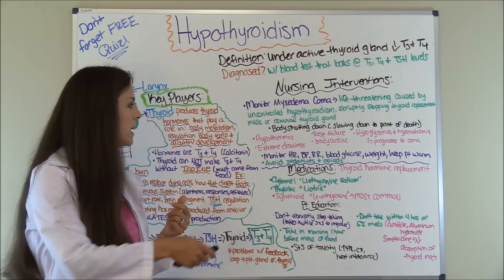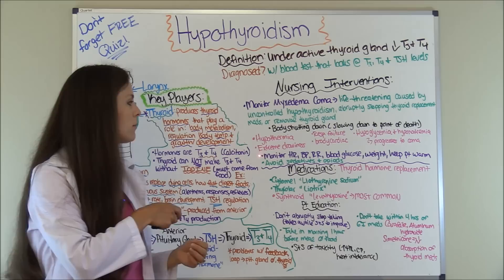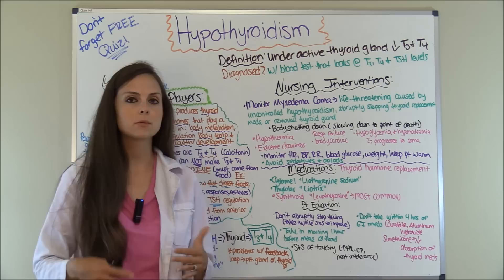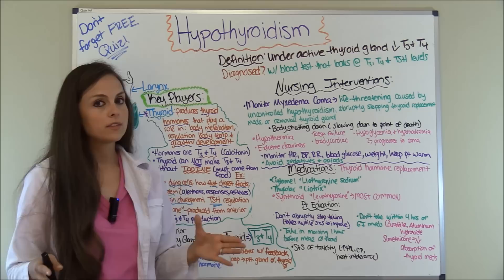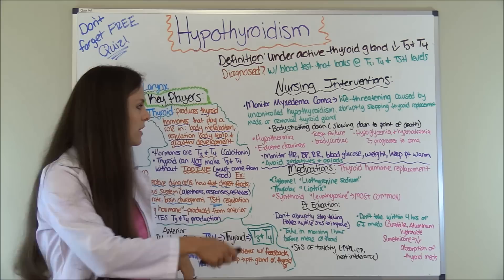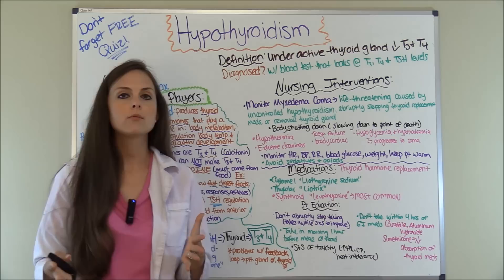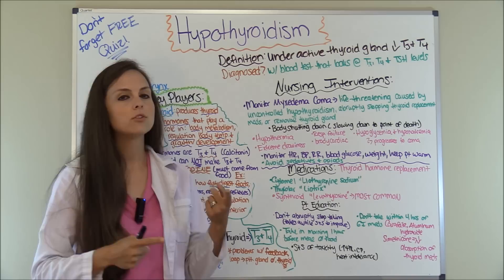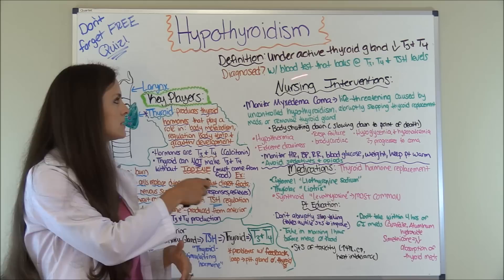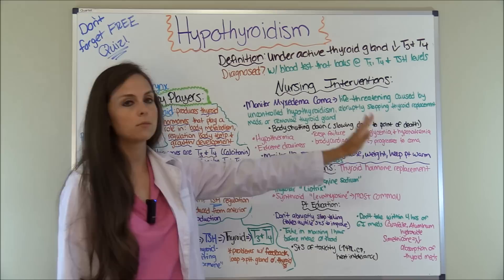Additional nursing interventions for hypothyroidism: monitor heart rate, blood pressure, respiratory rate, blood glucose, and weight — remember these patients are gaining weight — and keep the patient warm. Importantly, patients with hypothyroidism are very sensitive to sedatives and opioids. If they're having pain, use non-narcotic options like Tylenol rather than narcotics like Dilaudid, morphine, or fentanyl, because those medications could send them into a myxedema coma.